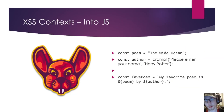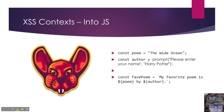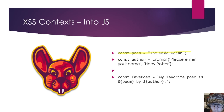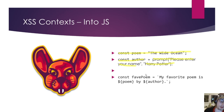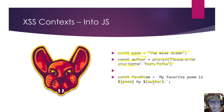For the JavaScript context, here's a code example. You have a constant 'poem' — just a little string — and a constant 'author' where we make a prompt to enter your name, with a default of 'Harry Potter.' Then we create a new variable combining those — 'poem' and 'author.' Since we're within the JavaScript context here, we might insert malicious code into the prompt.